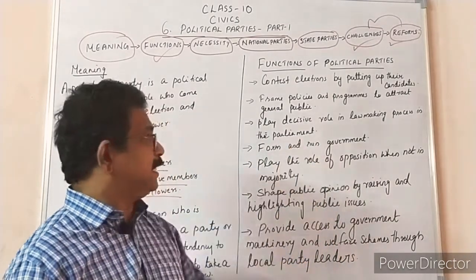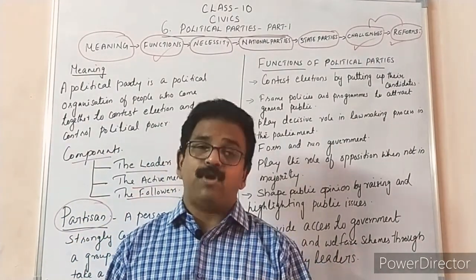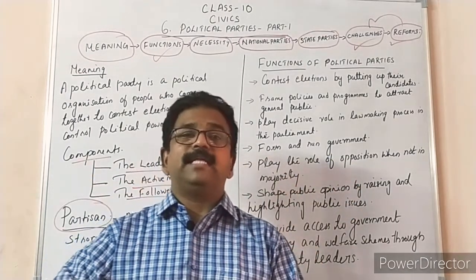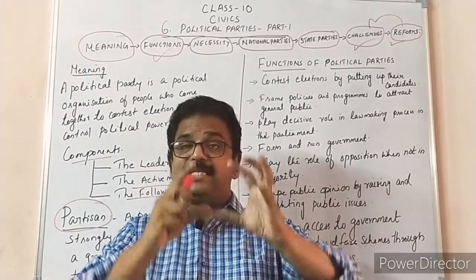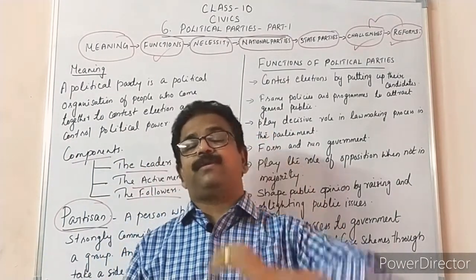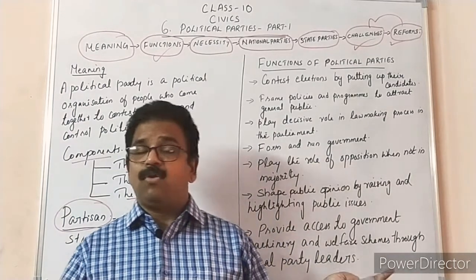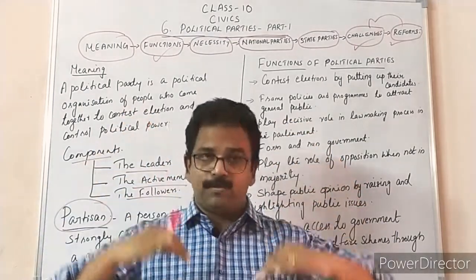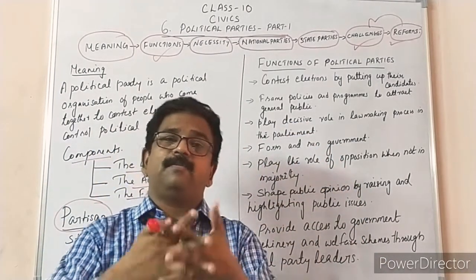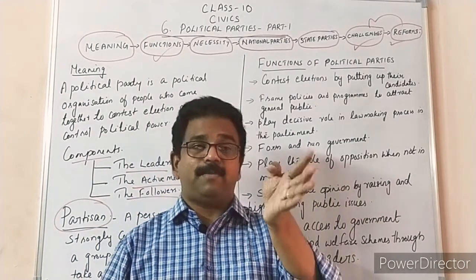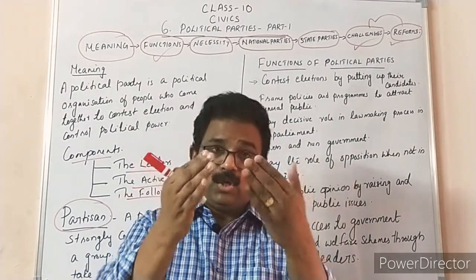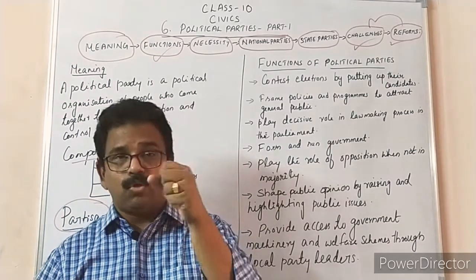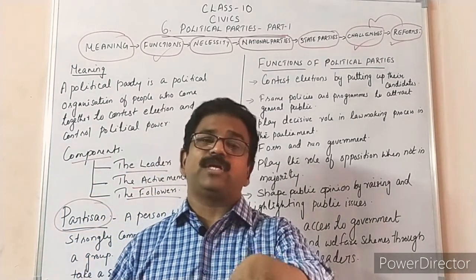The second function is that each political party has its own policies and puts forward programs for the general public. Political parties put forward different policies and programs, and the voters choose from them. BJP, Congress, BSP, SP — each party has its own policy. During elections they implement and announce their programs, saying 'if you elect us, we will do this.' So it is the people who choose who will come to power.